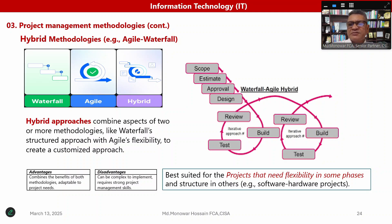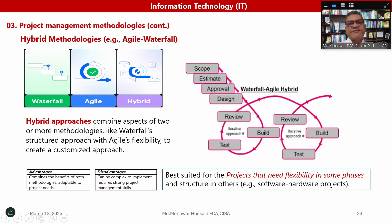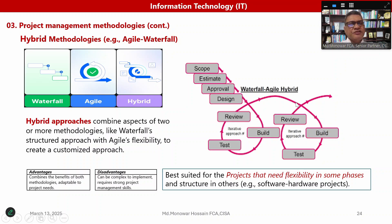The advantages of the hybrid model are that it combines the benefits of both methodologies, using only the positive aspects of each. It is best for flexible yet structured software and hardware projects. The hybrid process flows as: scope, establish, approval, design, build, test, review — then based on feedback and requirements, value is added, built again, tested, reviewed, and deployed. That is the hybrid model — a combination of two or more methodologies.